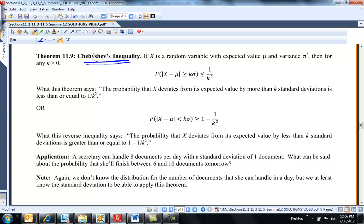Chebyshev's is similar, but at least here you would know the mean and the standard deviation. Let X be a random variable with expected value mu and variance sigma squared, then for any K greater than 0, the probability that X minus mu is more than K standard deviations is less than or equal to 1 over K squared.